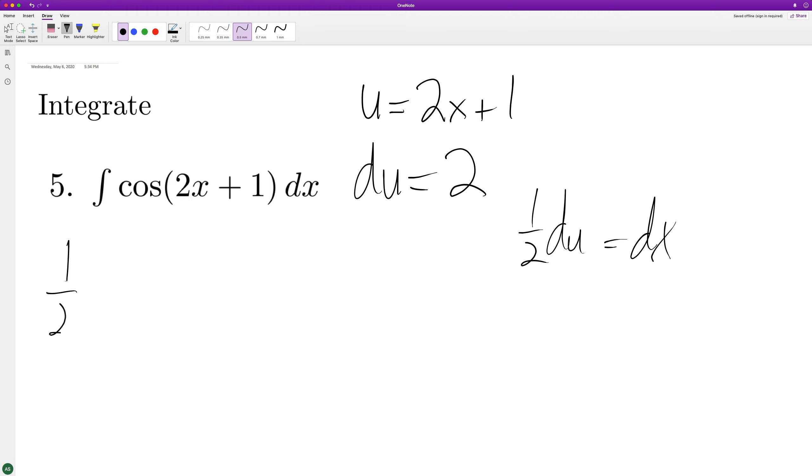So we get 1/2 integral of cosine of u, du, and the integral of cosine is sine. So we get 1/2 sine of u plus c.